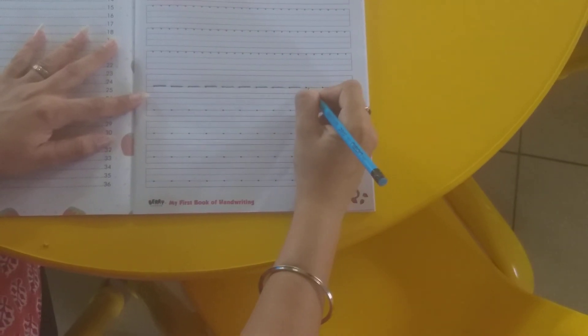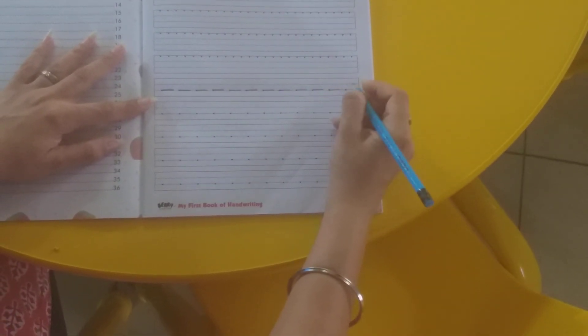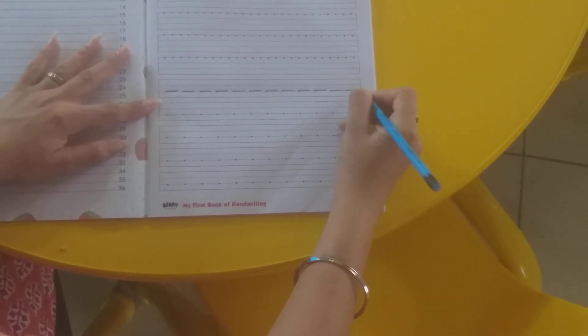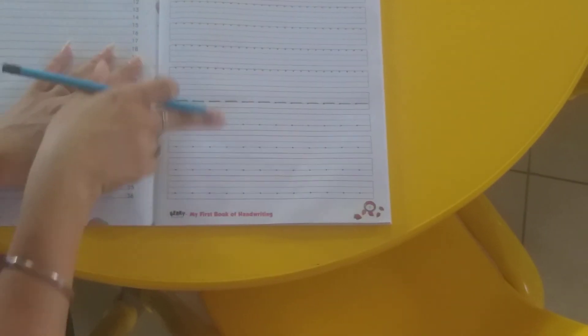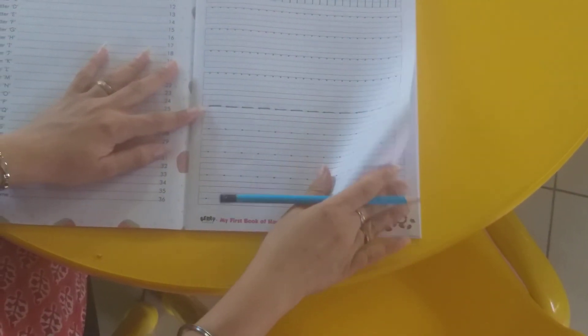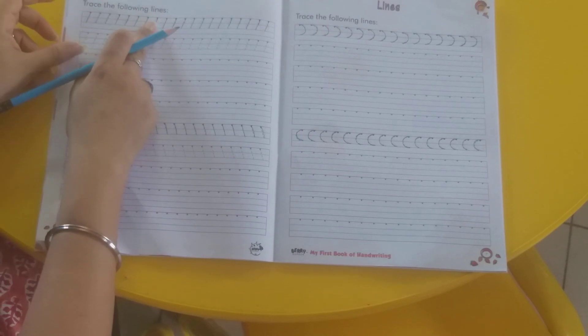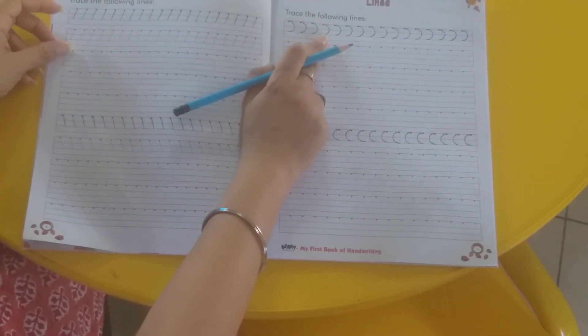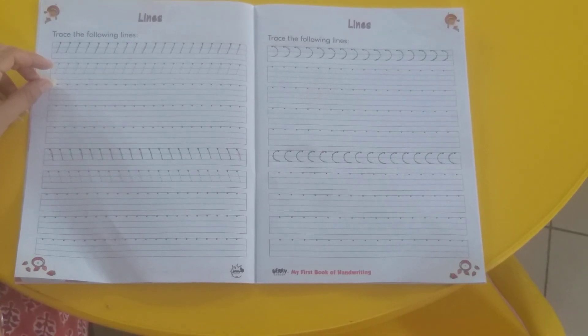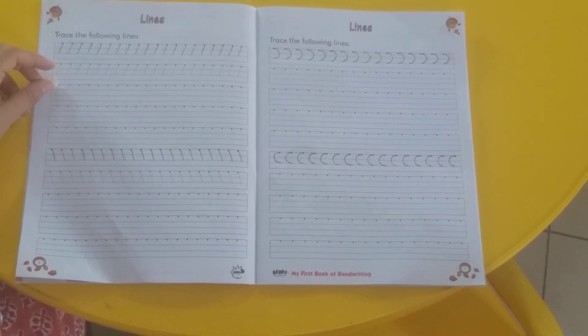To abhi aapko sari lines aa gai na bachcha. Slanting curve, sleeping lines, standing lines. Right? In this way you have to complete your fun work. First standing line, sleeping line, then slanting line and curve. So my dear students please practice this pattern book. Okay? Till then stay safe, stay happy. God bless you.